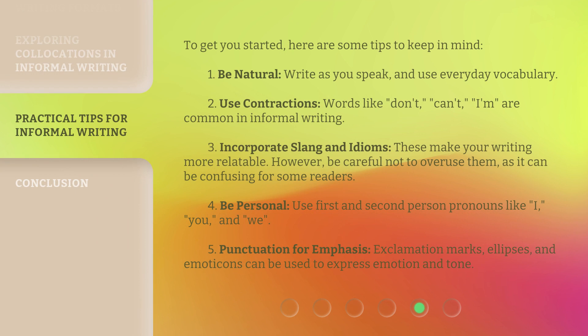To get you started, here are some tips to keep in mind. 1. Be natural — write as you speak, and use everyday vocabulary. 2. Use contractions — words like don't, can't, and I'm are common in informal writing. 3. Incorporate slang and idioms — these make your writing more relatable; however, be careful not to overuse them, as it can be confusing for some readers. 4. Be personal — use first and second person pronouns like I, you, and we. 5. Punctuation for emphasis — exclamation marks, ellipses, and emoticons can be used to express emotion and tone.